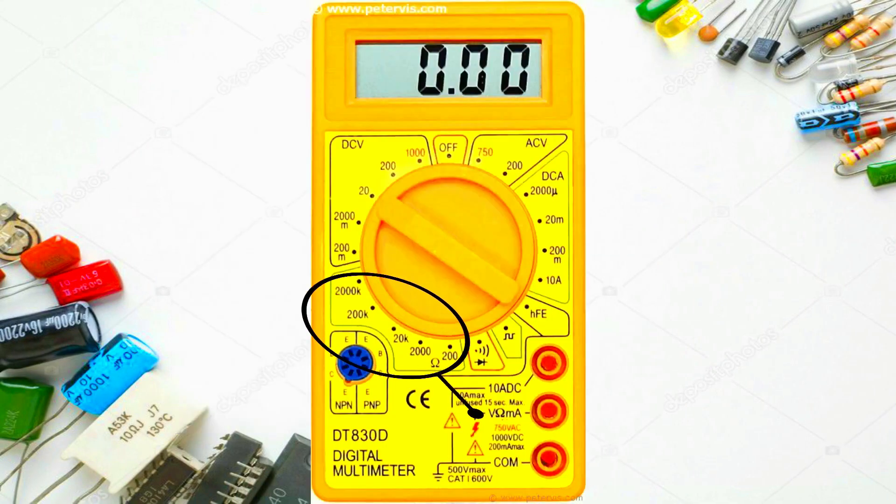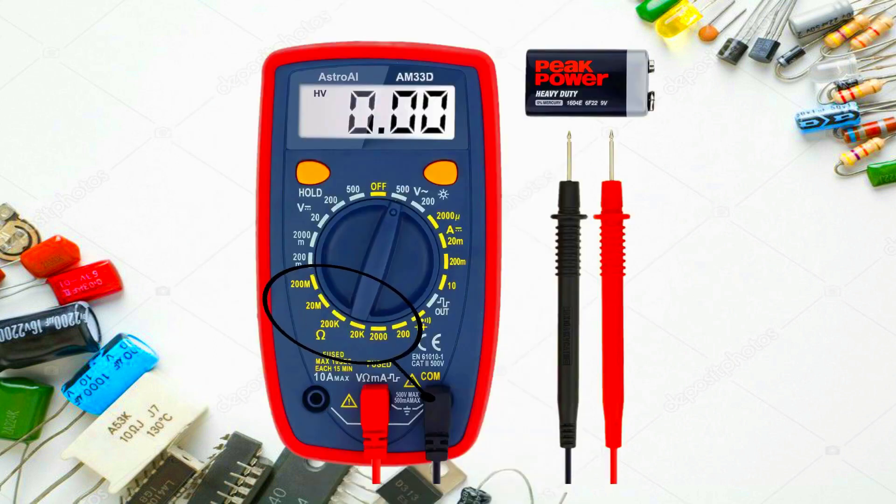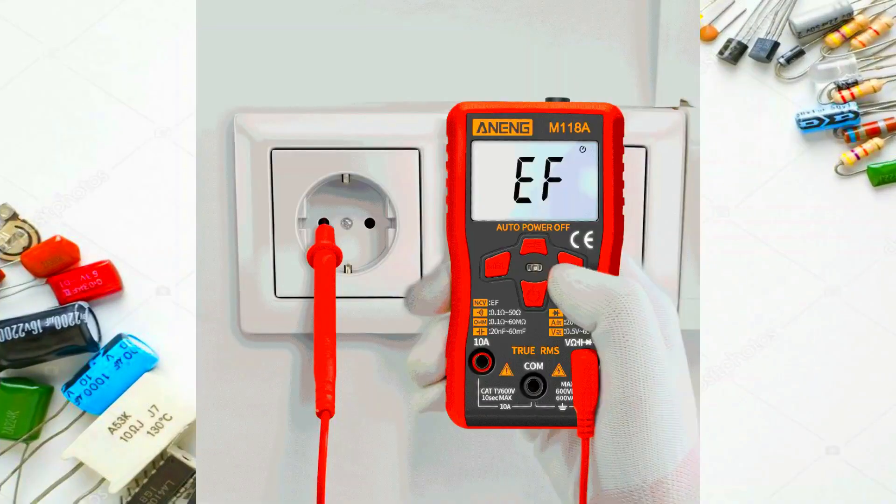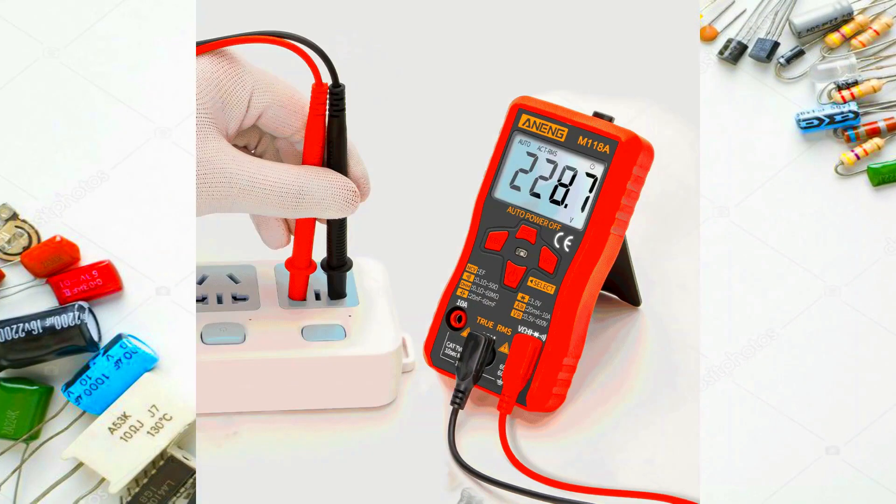You will have 200 ohms, 20,000 kilo ohms, up to 20 mega ohms, even more in some meters. Always try to set your multimeter in the correct range to get the correct value, especially when measuring resistance.